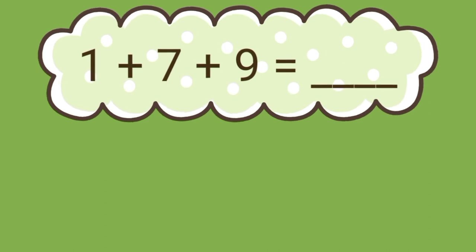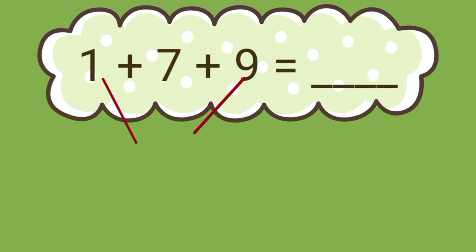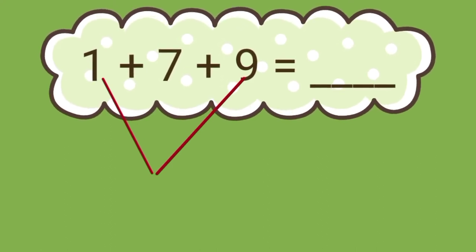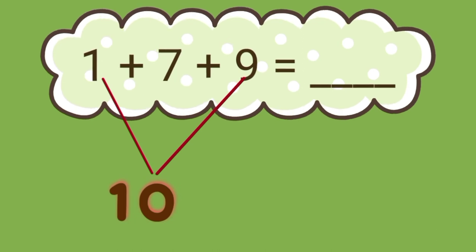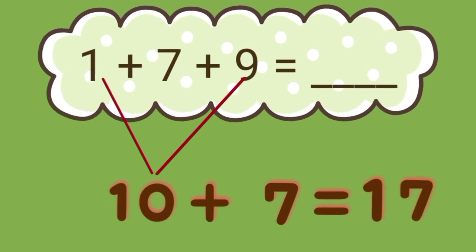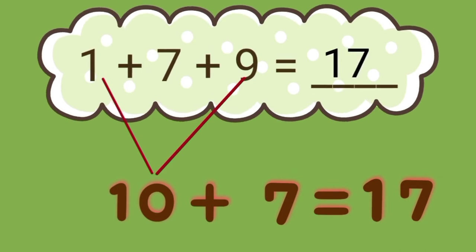Let's have another example. First, let's find the pair with the sum of 10. In this case, 1 and 9. 1 plus 9 equals 10. 10 plus 7 equals 17. So 1 plus 7 plus 9 equals 17.